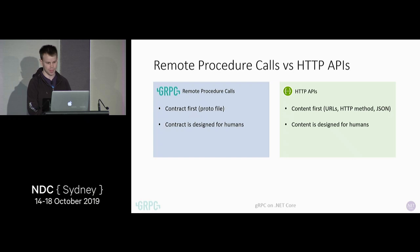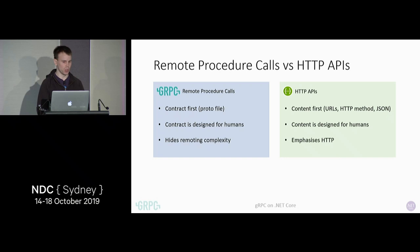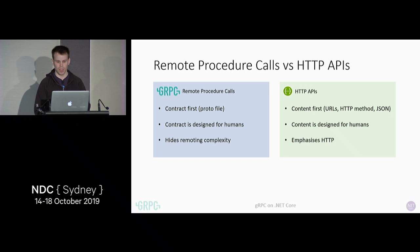The overall idea behind remote procedure calls is to hide the complexity of remoting. You should be able to invoke methods in .NET and have them run on a completely different server without having to worry about the underlying mechanism and what's getting sent. Meanwhile, with HTTP APIs, generally you're creating an HTTP client, building up a URL, serializing some JSON, putting that in the body, and sending it off.